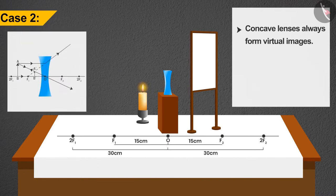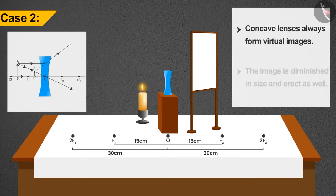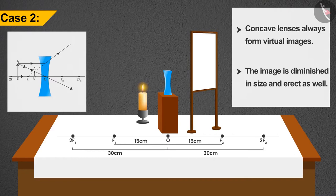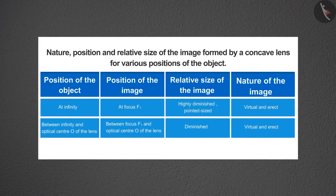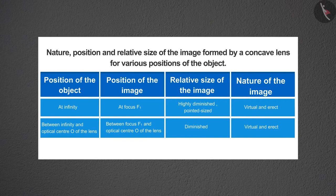If we remove the screen and see, we can find that the image seems to be forming somewhere between F1 and O. The image is diminished in size and erect as well. The summary of image formation for both the cases of concave lenses is given in this table.